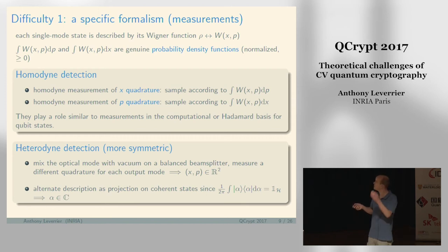Homodyne detection is basically sampling from these distributions. If you want to do homodyne detection of the x-quadrature, it means you integrate your Wigner function along the p-quadrature, get a distribution, and sample according to this distribution. You can measure the x-coordinate or the p-coordinate. These two measurements play a role similar to measuring in the 0-1 basis or the plus-minus basis for qubit states.